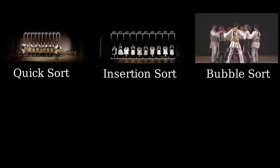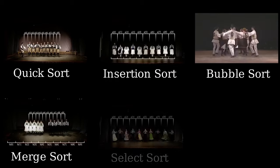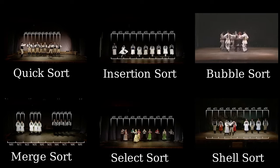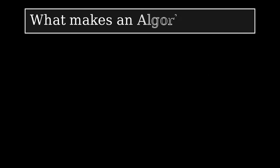While we just showed quicksort, there are also insertion sort, bubble sort, merge sort, select sort, shell sort and many, many more. Now this brings back the obvious question. What makes an algorithm good?